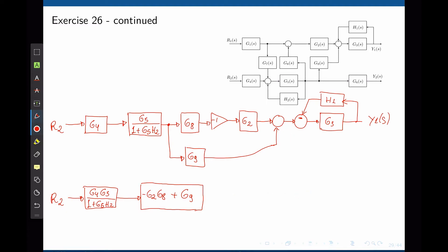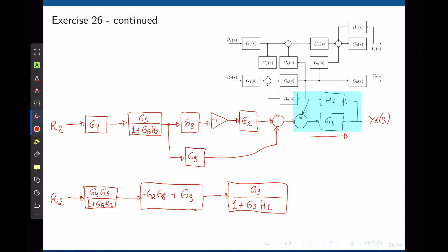Now moving forward, we have the feedback loop between G3 and H1, and that's a simple feedback loop. Now we know that the feedback loop simplifies as G3, the line function, divided by 1 plus, because of the negative sign, G3 H1. And this is Y1 of S.